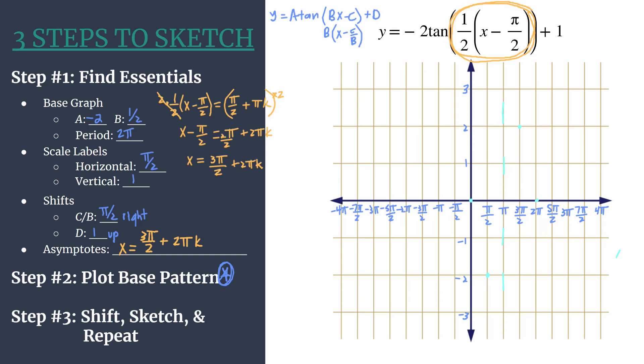So we have a lightly graphed base pattern. And now we're ready for step 3, where we will shift, sketch, and repeat. So we are going to be able to switch to our final color. I'll use green. And all we have to do is apply our shifts to these intermediate light blue points. So for each point, at the same time, we'll move right pi over 2, so that's one grid unit horizontally, and up 1. And that's also one unit vertically.